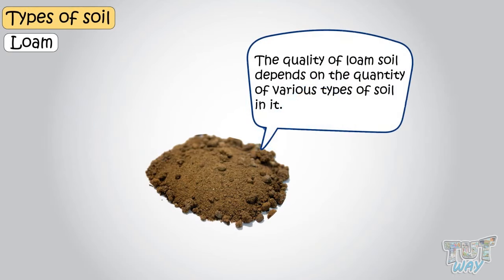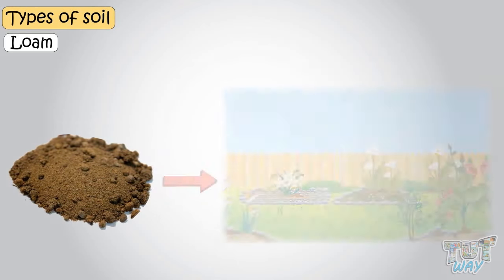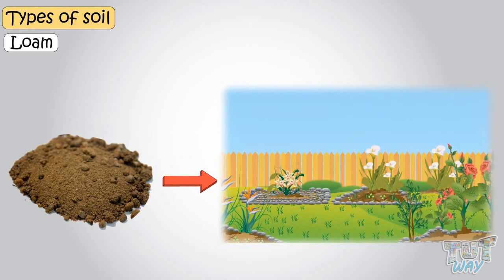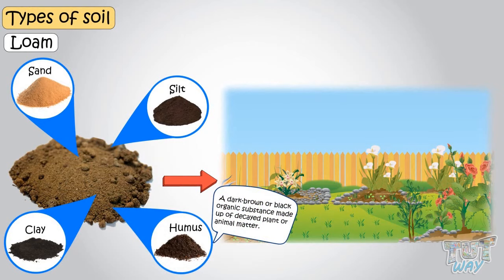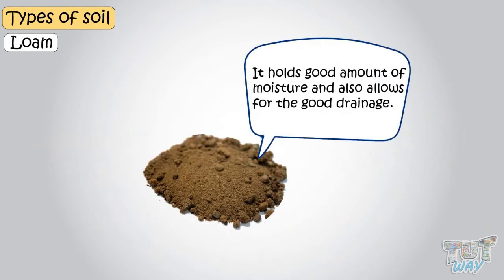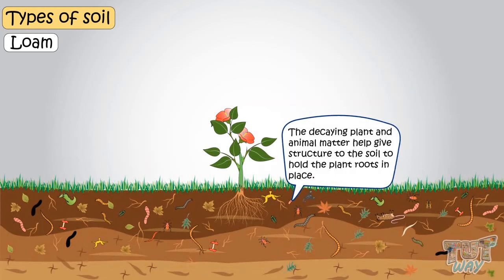The quality of loam soil depends on the quantity of various types of soil in it. This is why loam soil is always the first choice of a gardener, as it's best for plant growth, since it is a mixture of all types of soil and it has humus too. So it holds a good amount of moisture and also allows good drainage. The decaying plant and animal matter help give structure to the soil to hold the plant roots in place.